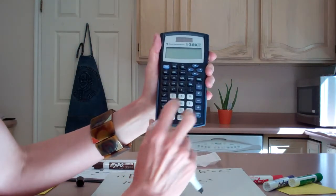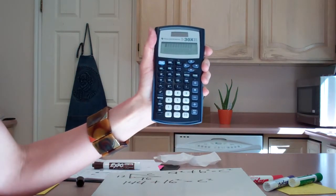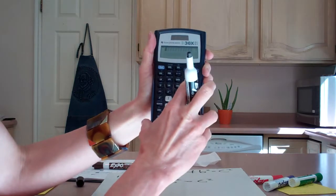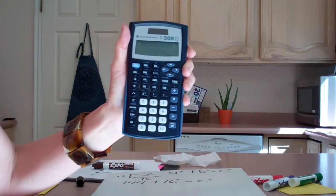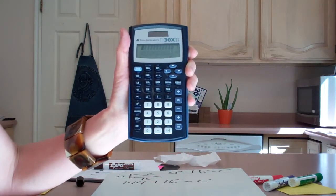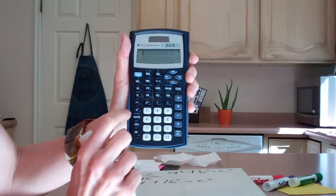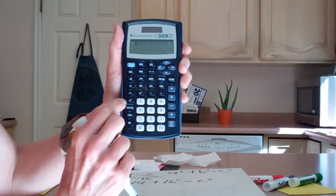In a basic calculator, you turn it on and make sure it's cleared and there's nothing in there. You'll have some very basic buttons, like this X squared button—it's the square button.